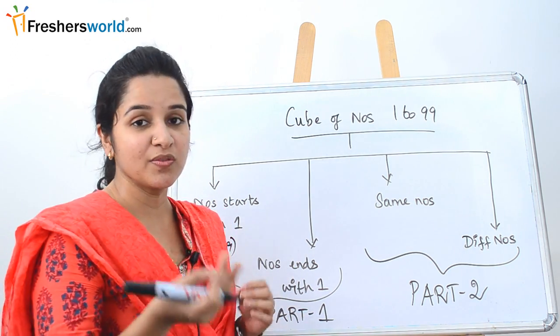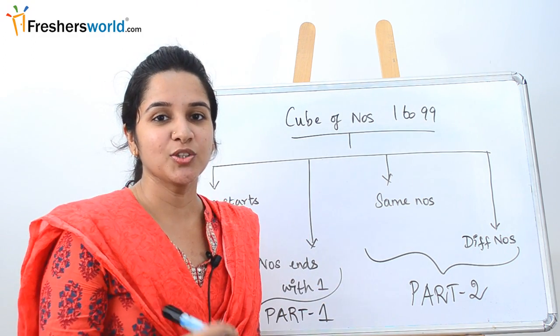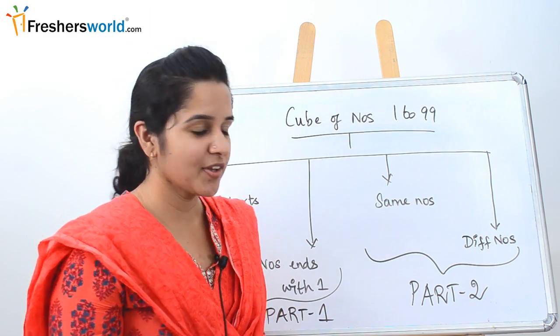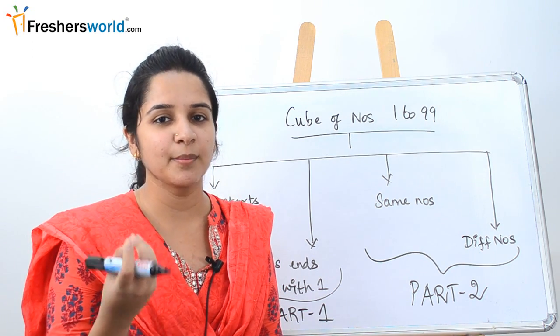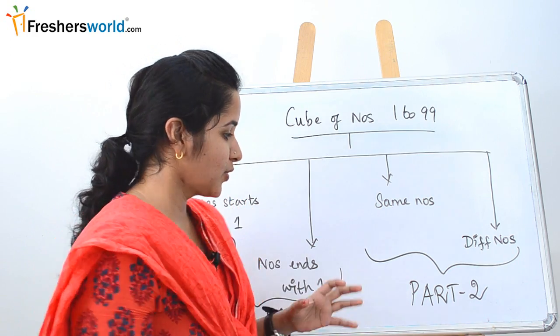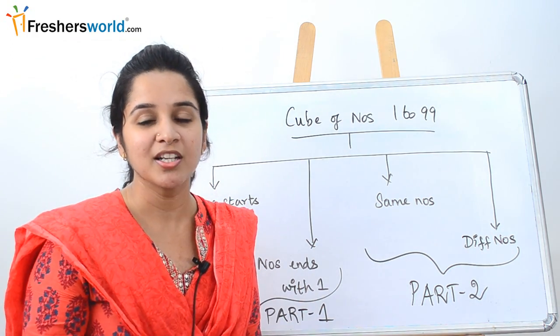Similarly, numbers that end with 1, like 21, 31, 41, are the ways in which we can solve it. Next is the same numbers, which is 22, 33, 44. The last thing we're going to see is different numbers like 23, 42, 83. This is being split into 2 parts for you to understand it much better. So let's get started.